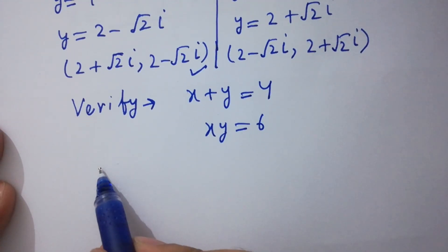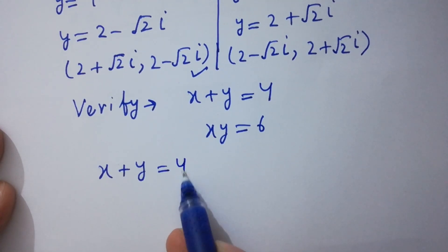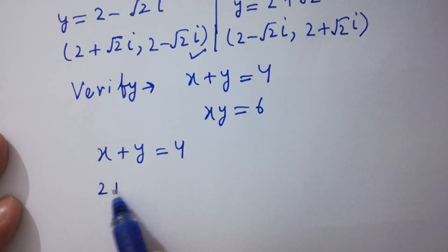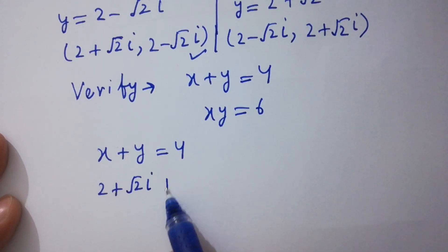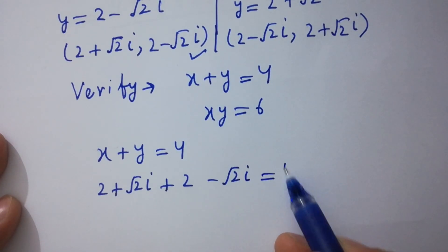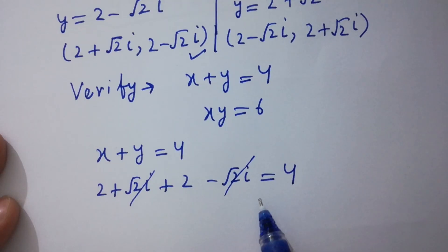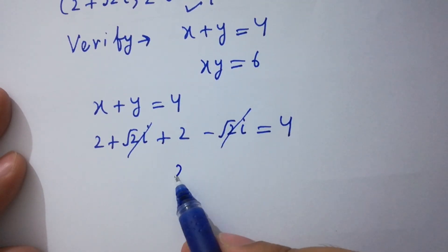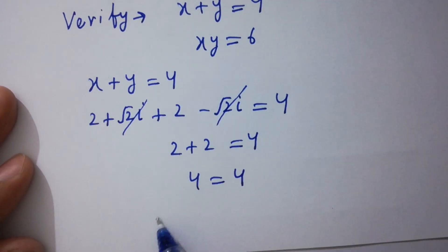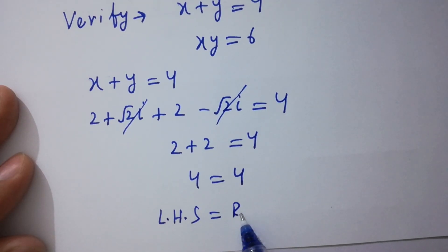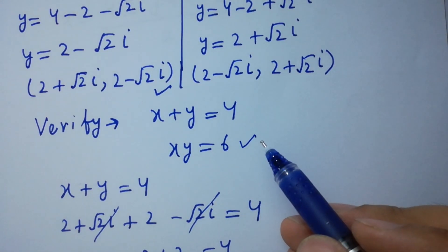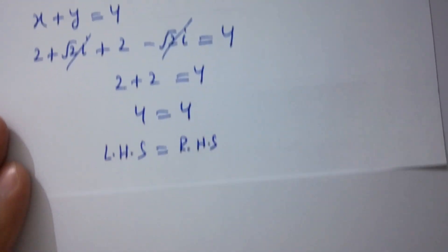For verification of x plus y equals 4: substituting x equals 2 plus √2·i and y equals 2 minus √2·i, we get (2 plus √2·i) plus (2 minus √2·i) equals 4. The √2·i and minus √2·i cancel, leaving 2 plus 2 equals 4. Left hand side equals right hand side. ✓